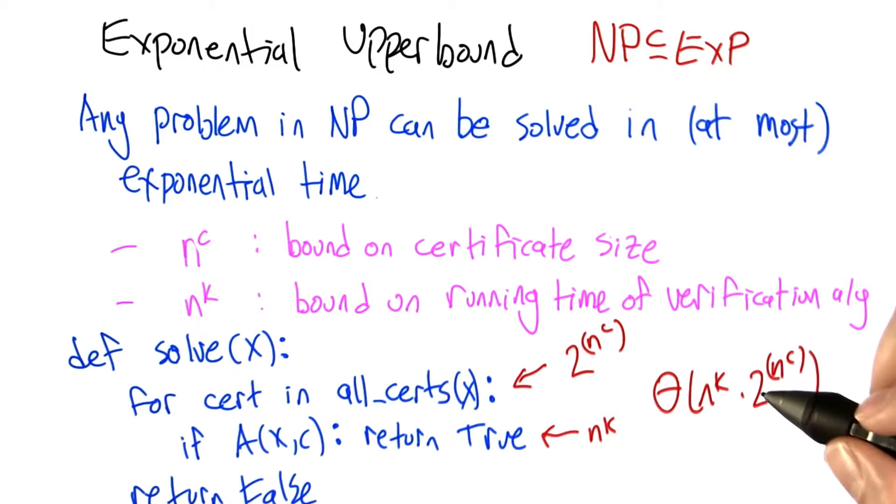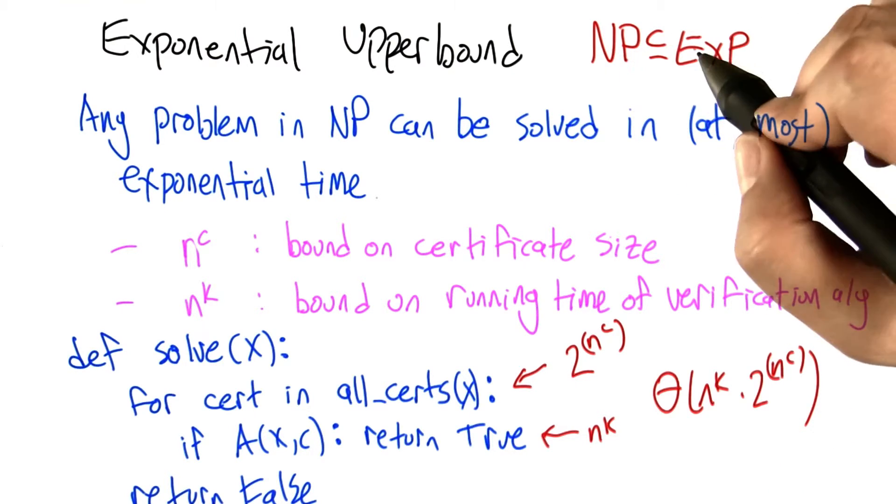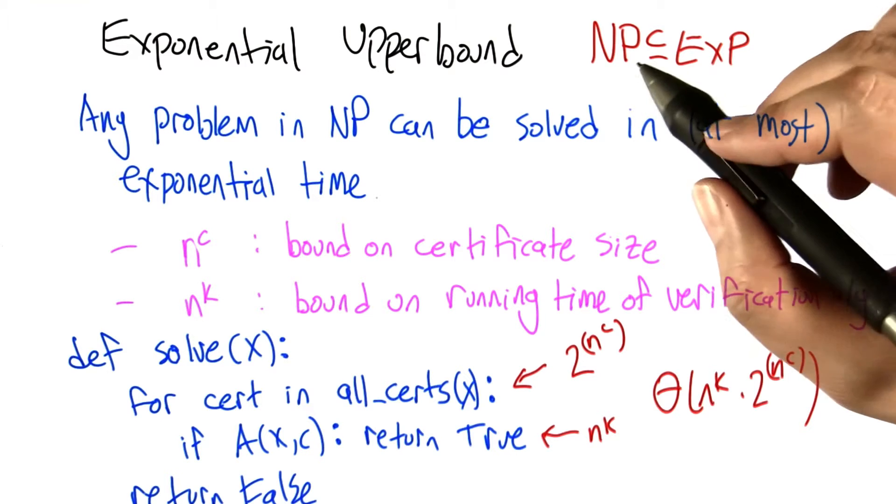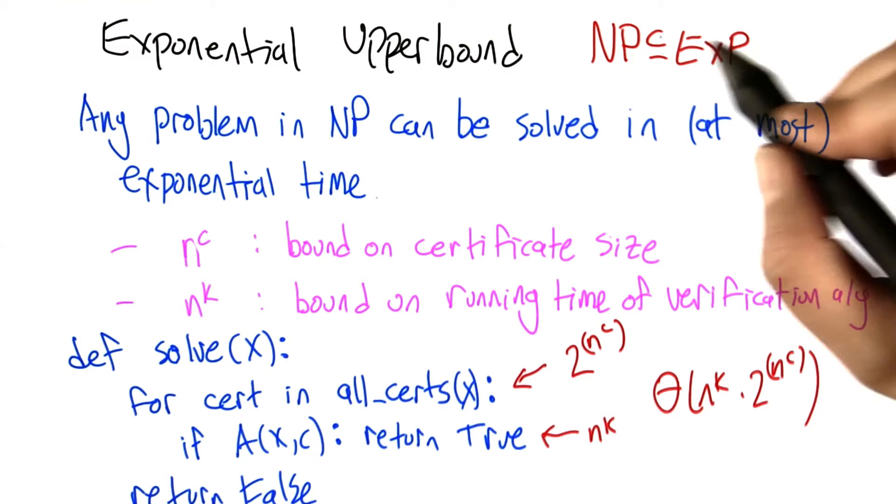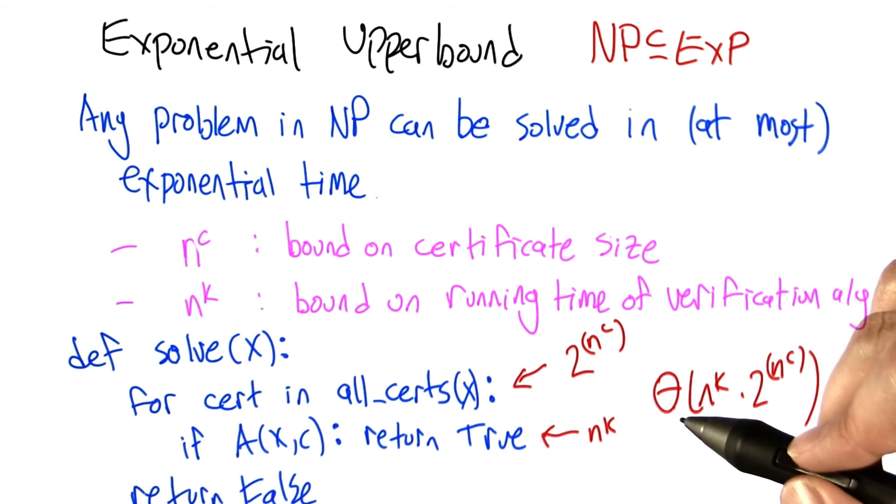Unless we're talking about problems that are really tiny, this is going to be horrible. But sometimes problems really are tiny, and mostly I'm introducing this as a way of connecting these two concepts of the class NP and what it means to run in exponential time. So it's nice to know that at least any problem in NP is solvable. We could write an algorithm that would run it. It's just that that algorithm may take a very, very long time to complete.